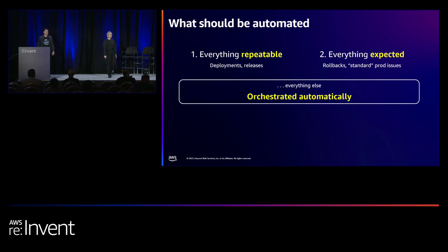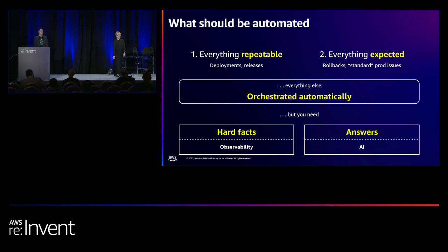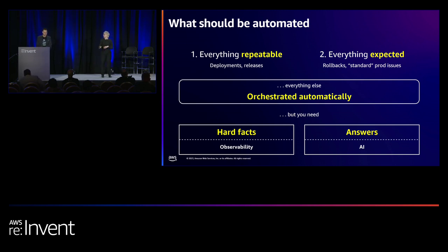For everything else, we don't necessarily automate every single step, but we look at orchestration — how do we pull everything together? And to do that, we need observability. We need to know what we're looking at, otherwise what are we orchestrating? And then of course we're looking at being able to ask certain questions and get the answers — that's really where AI can provide a lot of value.